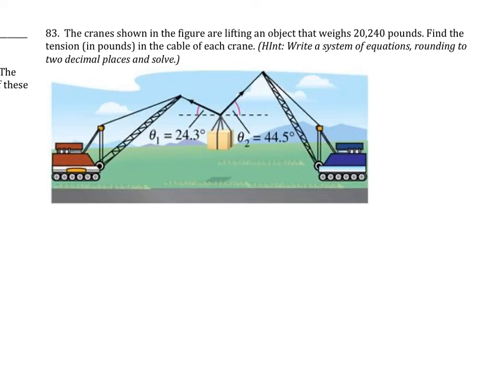Here's number 83 on 6.3. The cranes shown in the figure are lifting an object that weighs 20,240 pounds. Find the tension in pounds in the cable of each crane. We are going to write a system of equations, rounding to two decimal places to help us solve this.